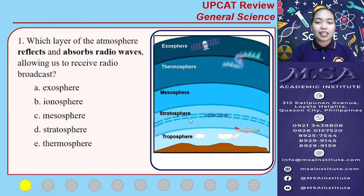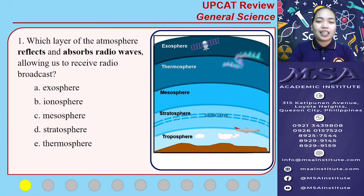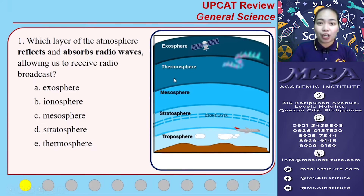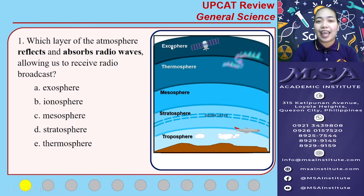The next layer is the stratosphere, which contains the ozone layer that absorbs UV rays from the sun. Then we have the mesosphere, which is the coldest layer. The thermosphere is the hottest layer due to the absorption of energetic UV rays and x-rays from the sun. Then we have the exosphere, which is the outermost layer of the atmosphere.